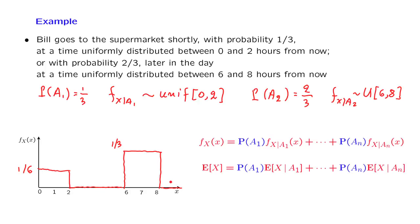We can now use the total expectation theorem. The conditional expectation under the two scenarios is found as follows. Under the first scenario we have a uniform between 0 and 2, so the conditional expectation is 1, weighted by probability 1/3. Under the second scenario, which has probability 2/3, the conditional expectation is the midpoint of the uniform on 6 to 8, which is 7. This gives us the overall expected value of the time at which Bill goes to the supermarket. This simple example illustrates nicely how we can construct a model with different scenarios, and by knowing the distribution under each scenario, find the overall distribution and expected value.